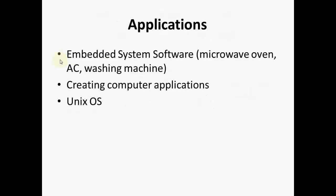Applications of C. C is widely used in Embedded Systems Software Designing. Examples of embedded systems are Microwave, AC, Washing Machine — C is used to develop the software which is used to operate these embedded systems. C is also used in creating computer applications. The whole Unix operating system is developed in C Language. There are many other applications of C; we have covered very few.